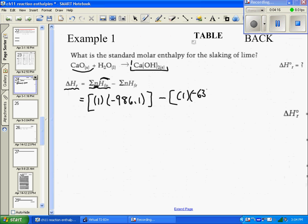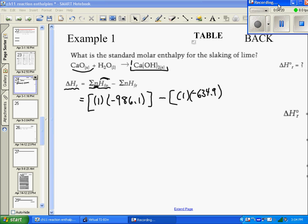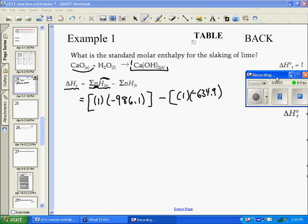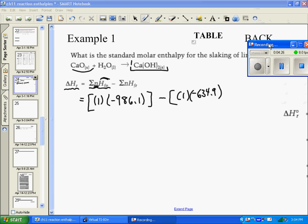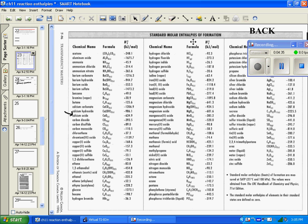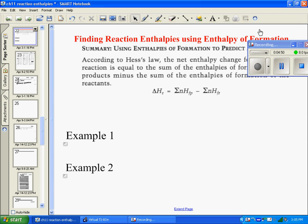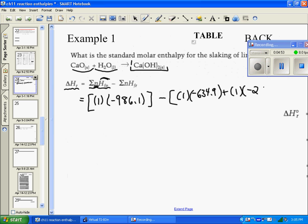So negative 634.9. The next term we have is liquid water, one mole of liquid water. We go to our table and look up water as a liquid. As a gas, it's 241.8, and as a liquid it's negative 285.8. So negative 285.8, and when we plug all this in, that tells us how much energy we get for the entire reaction.